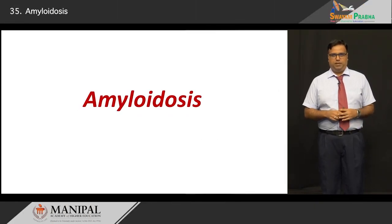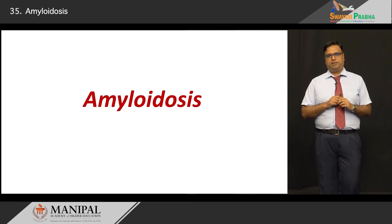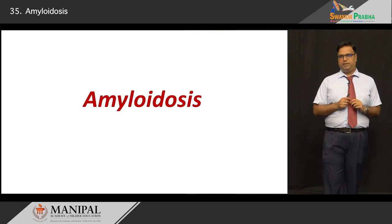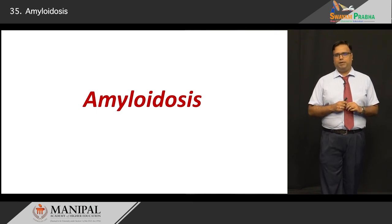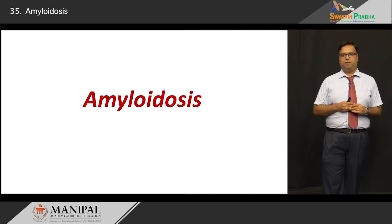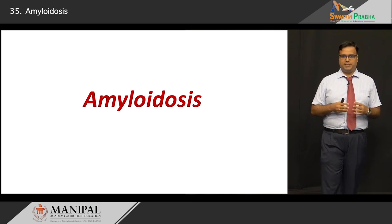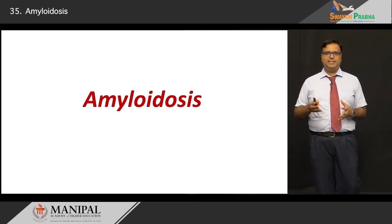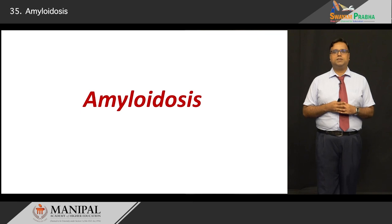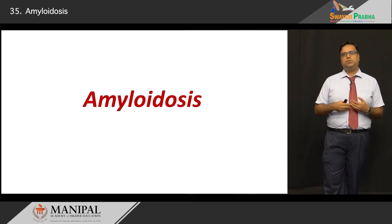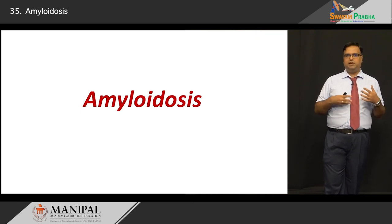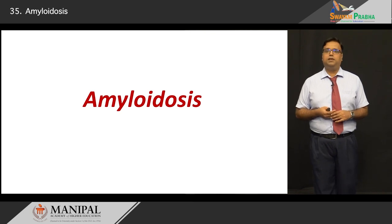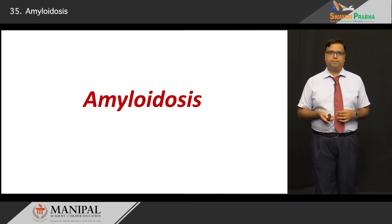Good day everyone. The last aspect, an important one nonetheless, but slightly different from what we have studied so far in the immune system diseases, is what is called as amyloidosis. This has its place in the immune system disorder because some of the cells which engage and result in the pathogenesis of the disease are entirely that of the immune system.